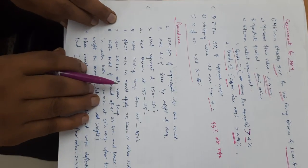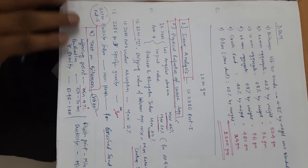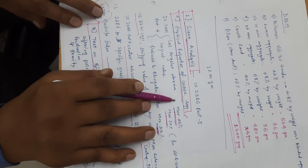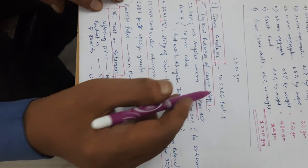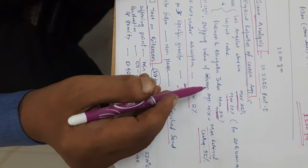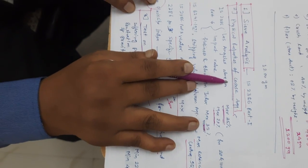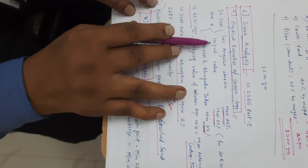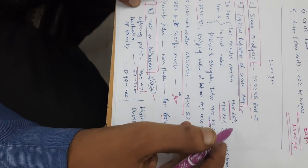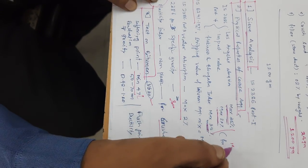The percentage of air voids should be between 3 to 5%. If we observe the physical properties of the aggregate, we have to do sieve analysis as per IS 2386 for defining whether it is Grade 1 or Grade 2. We also have to identify the physical properties: Los Angeles abrasion value, impact value, flakiness and elongation index — all should be within the specified limits by IRC, Indian Road Congress.